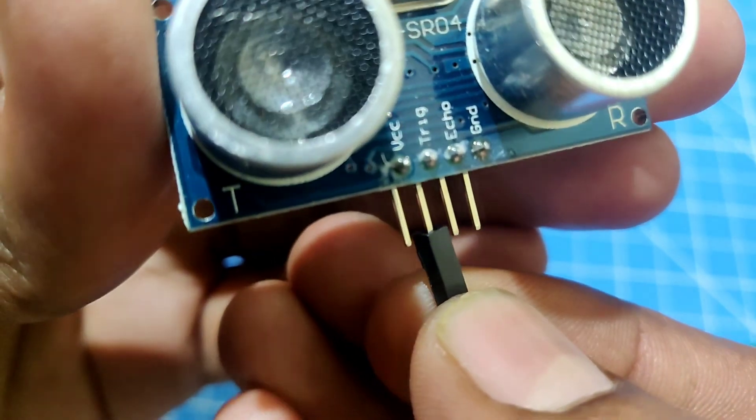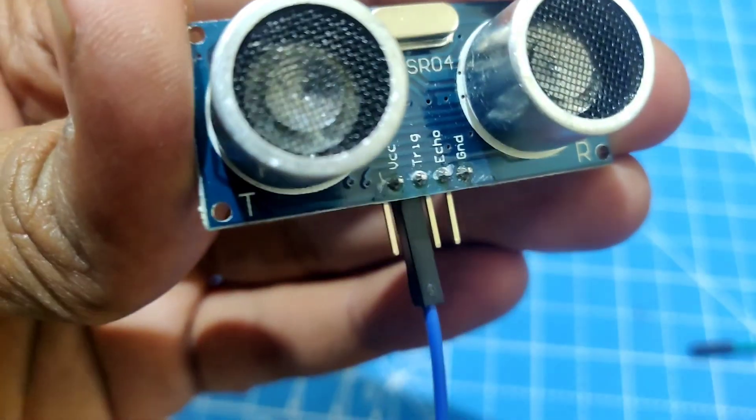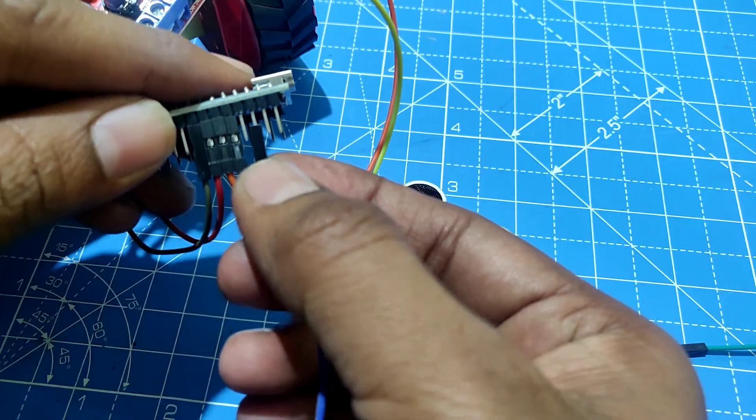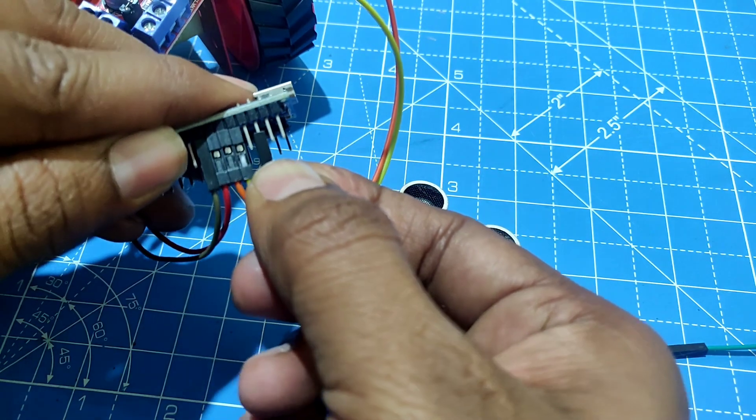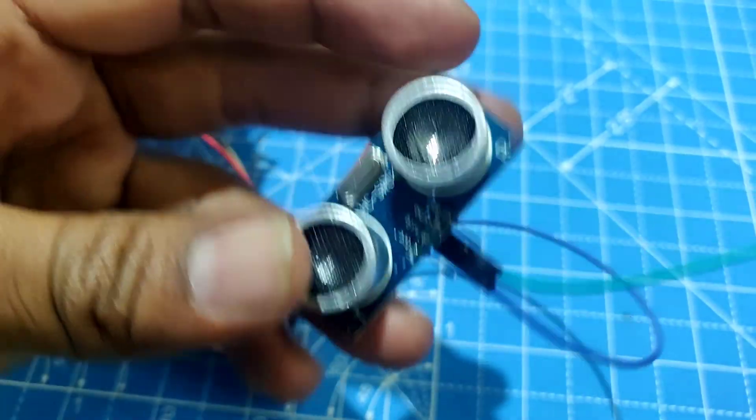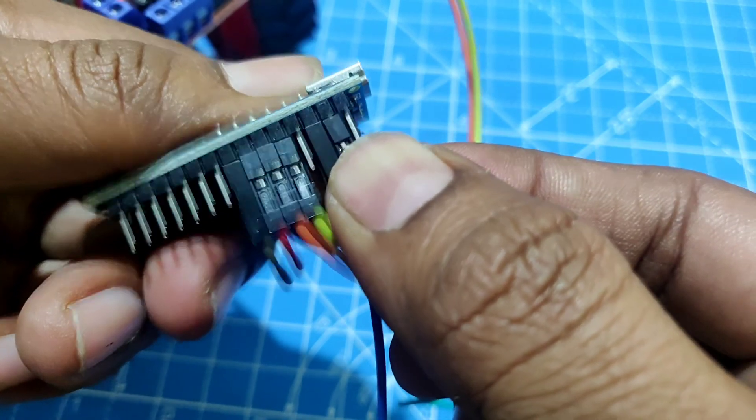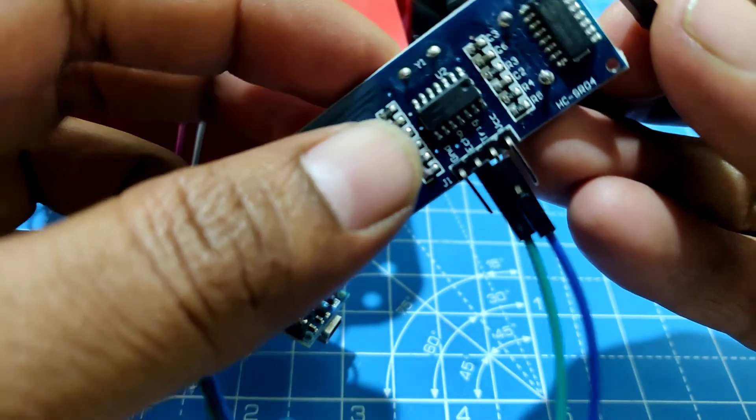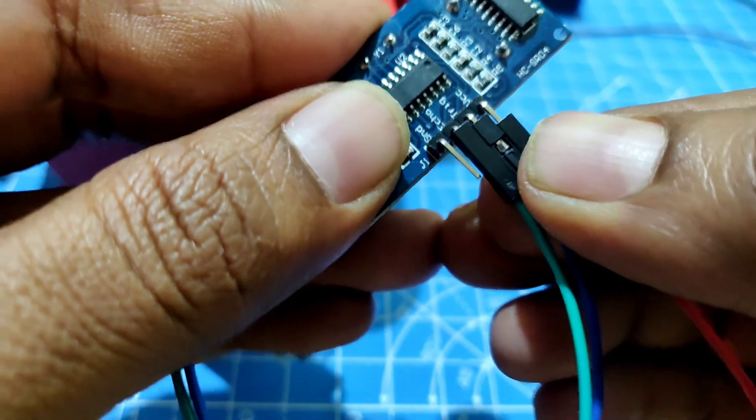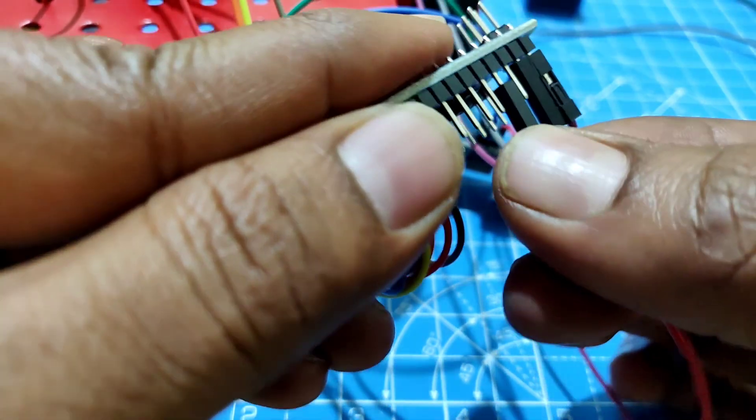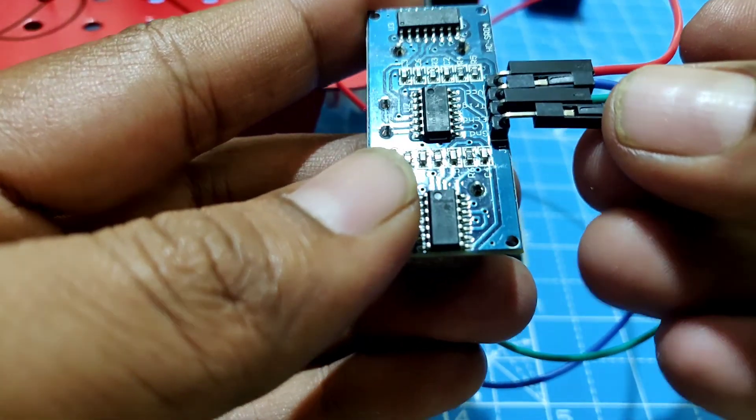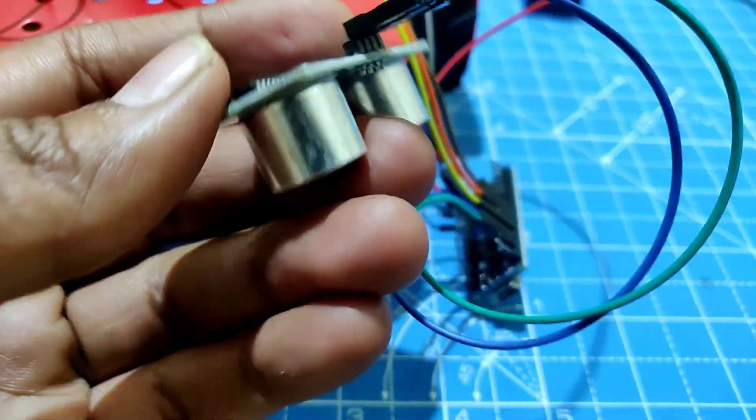Connect the trigger pin to data pin number 10 of the Arduino. Connect the echo pin to pin number 11. Connect the VCC pin to 5V supply pin of the Arduino. Connect the ground pin of the sensor to ground pin of the Arduino.